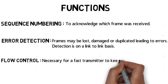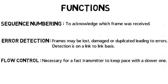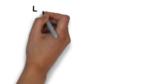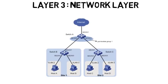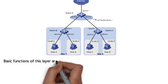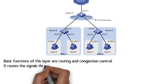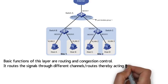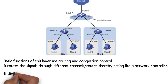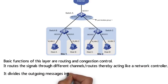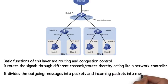Layer 3 is the Network Layer. Basic functions of this layer are routing and congestion control. It routes the signal through different channels, thereby acting like a network controller. It divides the outgoing messages into packets and incoming packets into messages for higher layers. Please note that the network layer does not guarantee that a packet will reach its intended destination.